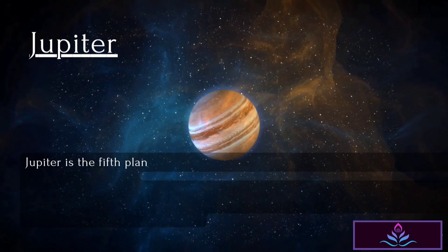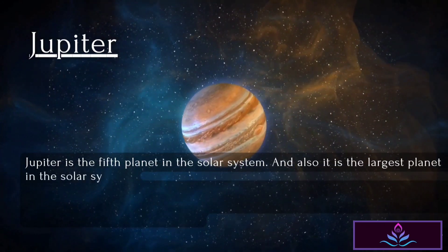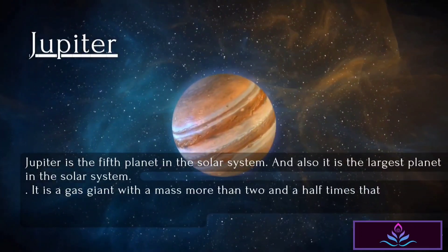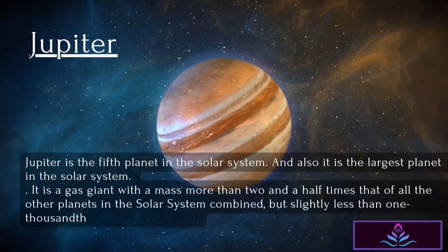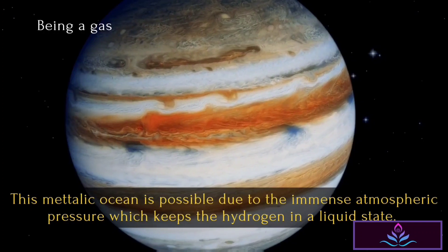Jupiter is the fifth planet in the solar system and also the largest planet in the solar system. It is a gas giant with a mass more than two and a half times that of all the other planets in the solar system combined, but slightly less than one-thousandth the mass of the Sun.